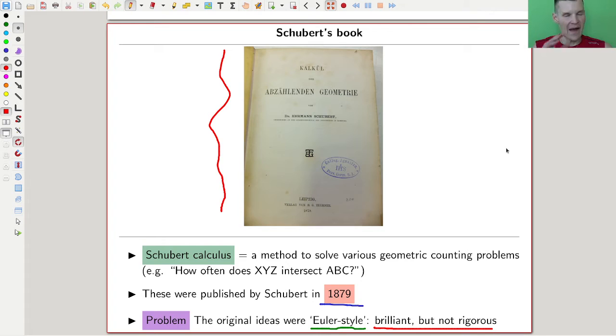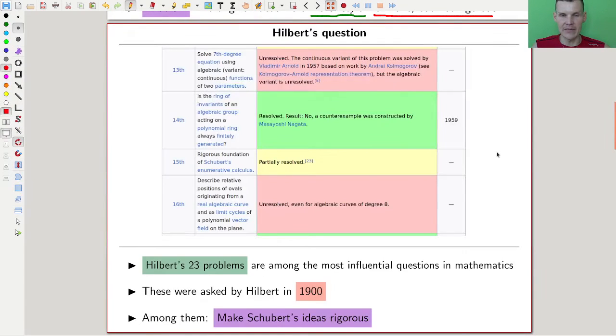Schubert calculus, absolutely brilliant. And it's a little bit a miracle where Schubert got all these formulas from. But anyway, this kind of solves all these type of intersection type questions, how many lines intersect the given plane generically in five points, some questions like that. So people got really, really excited about it.